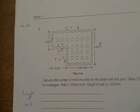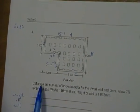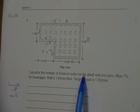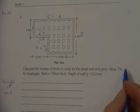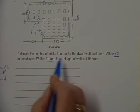Okay, so now I'm going to read my question. Calculate the number of bricks to order for the dwarf wall and piers, allow 7% breakages. The wall is one tin thick, so one skin, and the height of the wall is 1032 millimeters.